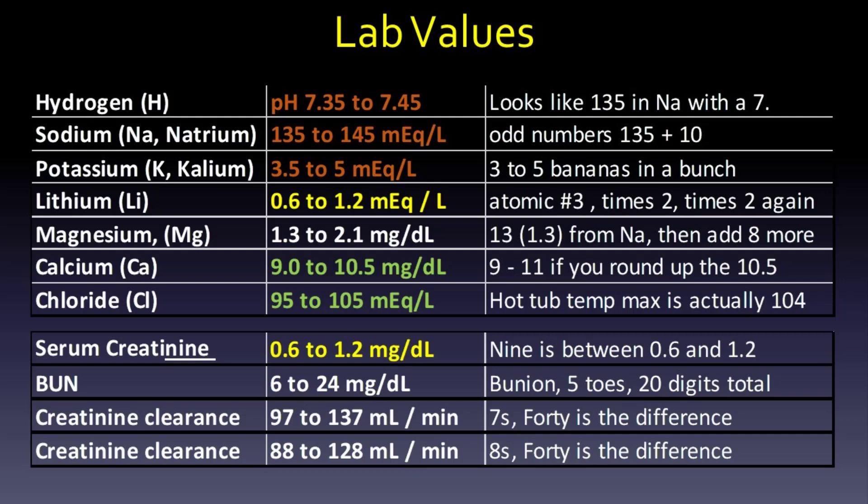For magnesium, you could take the 1 and 3 from sodium, giving you 1.3 to 2.1. Then calcium and chloride you probably never put together, but calcium is 9.0 to 10.5 — very similar to chloride at 95 to 105, though I've also seen 96 to 106 for chloride. The calcium mnemonic is 9-1-1, so 9 to 10.5 if you round up.